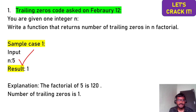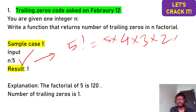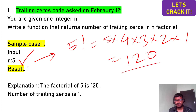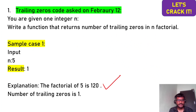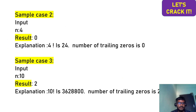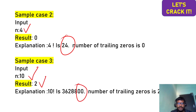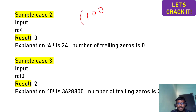The question is: given a number n, return the number of trailing zeros in n factorial. Five factorial equals 5×4×3×2×1 = 120, so the trailing zero is 1 — we return 1. Four factorial contains no trailing zeros, so the output is 0. Ten factorial contains two trailing zeros, so the output is 2.